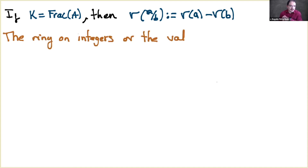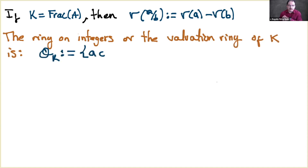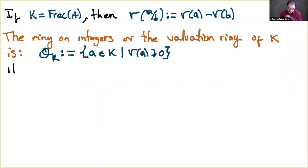Taking π ≠ 0 with v(π) ≠ 0, we can consider the projective limit of the rings 𝒪_K/(π^n), and this gives the completion of the ring of integers — denoted 𝒪̂_K. It turns out to be an integral domain, and its fraction field recovers exactly the completion of K. This shows that the topology from the projective system and the topology from the valuation are compatible.